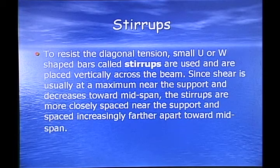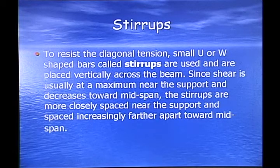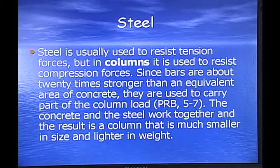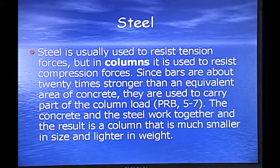Stirrups. To resist the diagonal tension, small U- or W-shaped bars called stirrups are used and are placed vertically across the beam. Since shear is usually at a maximum near the support and decreases towards mid-span, the stirrups are more closely spaced near the support and spaced increasingly further apart towards mid-span. Steel is usually used to resist tension forces, but in columns it's used to resist compression forces.